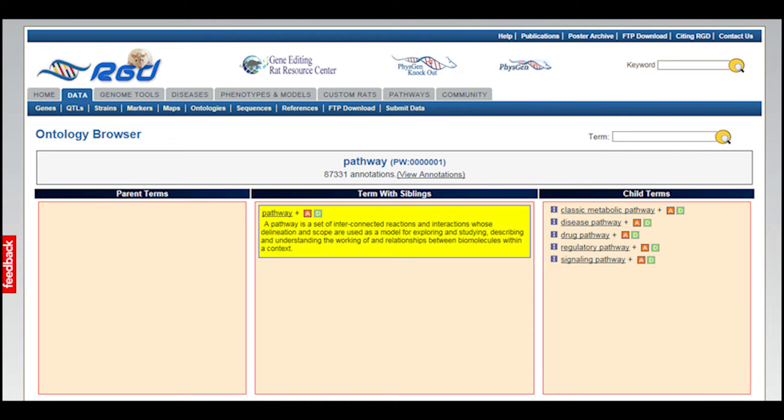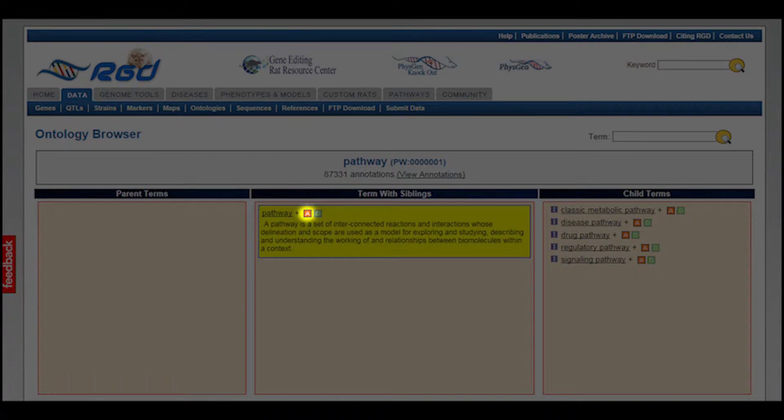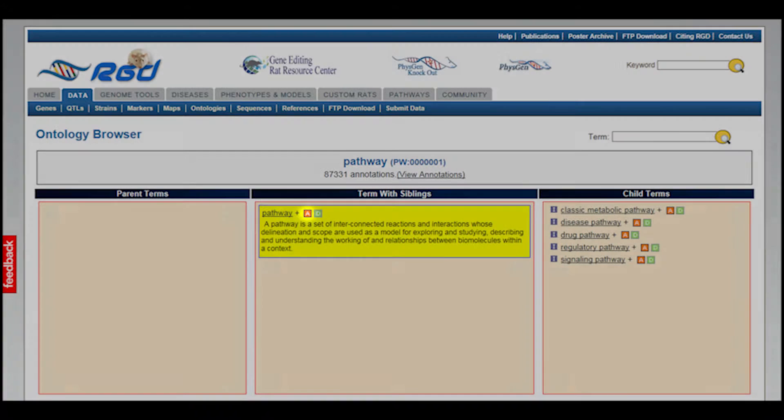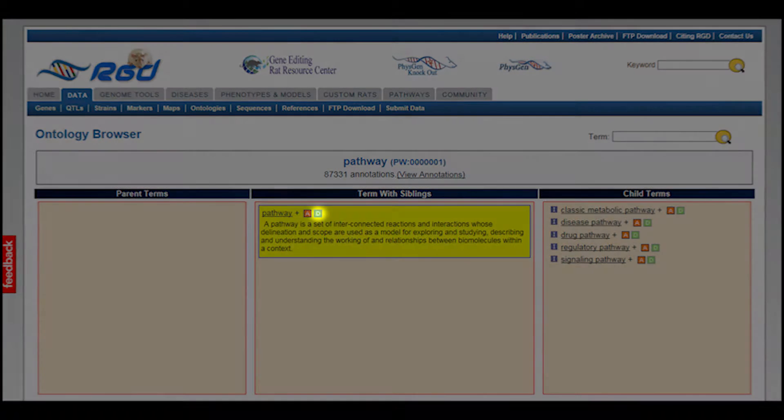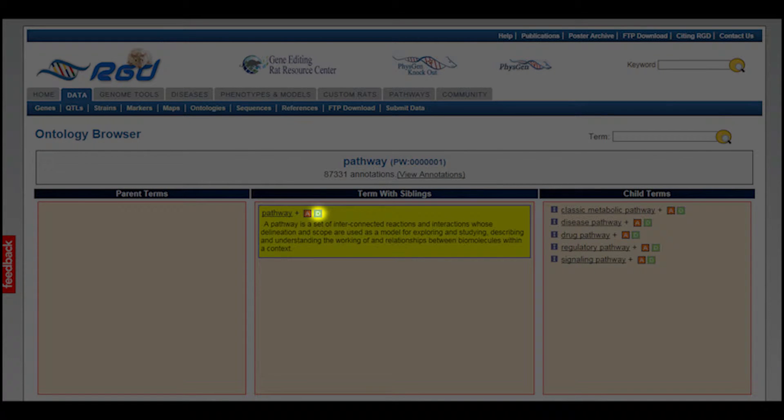In the ontology browser, you can tell whether there is a diagram for a particular term by viewing the icons next to the text. An orange A means that RGD has annotations available for that diagram, meaning that term or at least one of its children is associated with a specific set of genes. A dark color D means that there is a pathway diagram available for that term specifically.